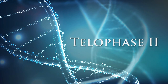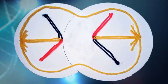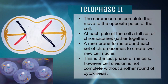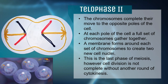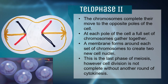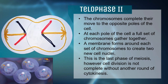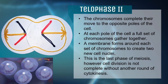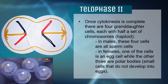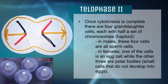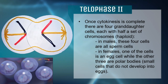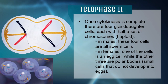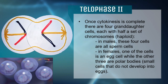The last stage of meiosis is Telophase II. The chromosomes complete their move to different poles in each cell. A full set of chromosomes gathers at each pole, and the membrane forms once again to create two new cell nuclei, followed by cytokinesis. Finally, meiosis is completed and four daughter cells are made, each with half a set of chromosomes — haploids. In males, all four are sperm cells; in females, one is an egg cell and the others are polar bodies that do not develop into eggs.